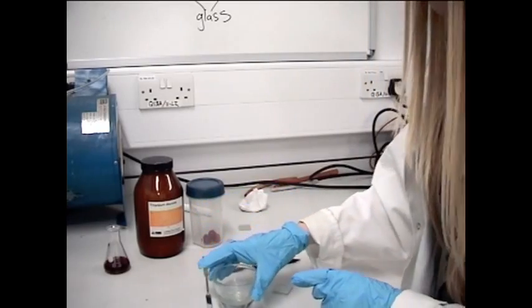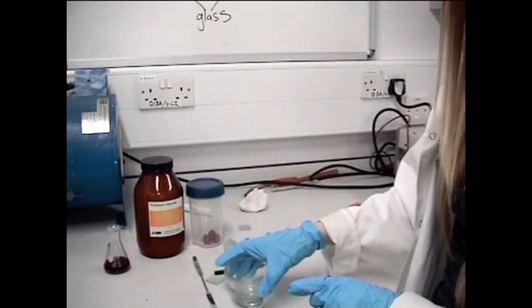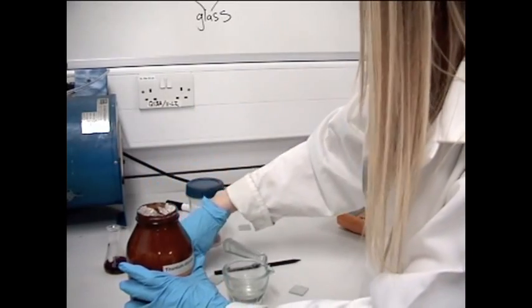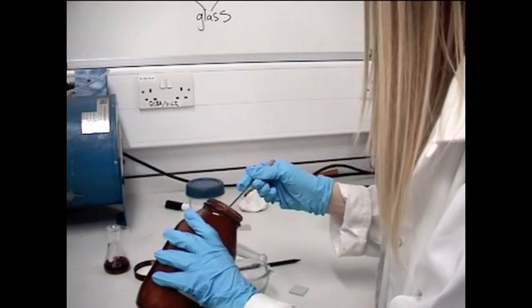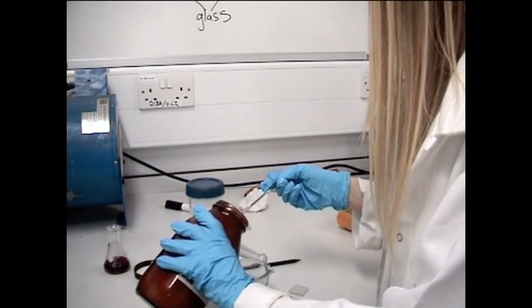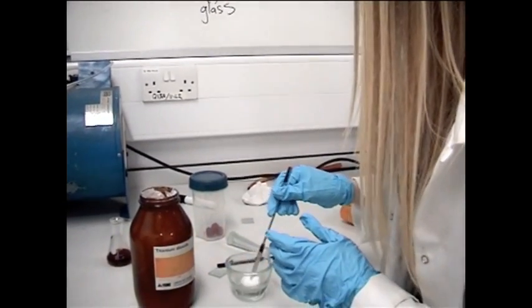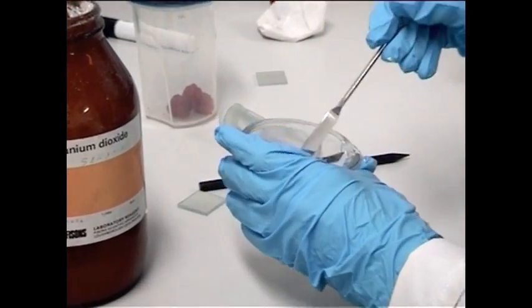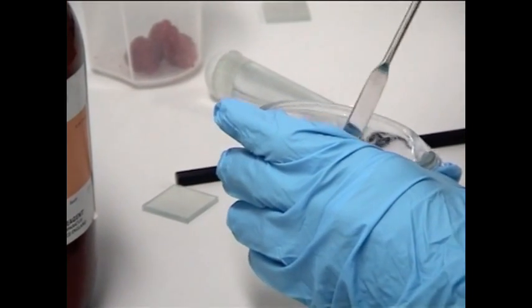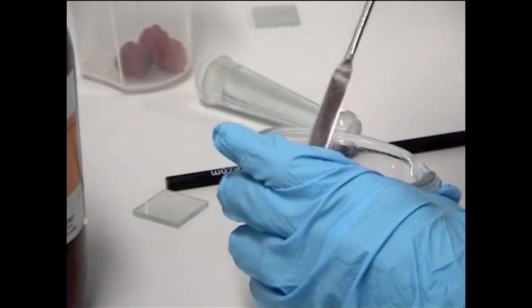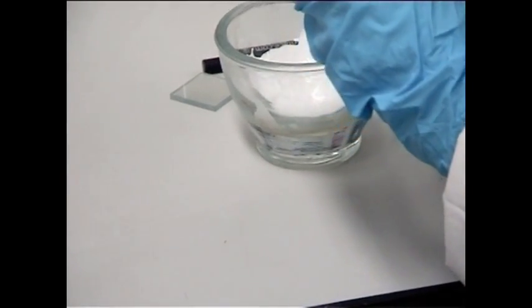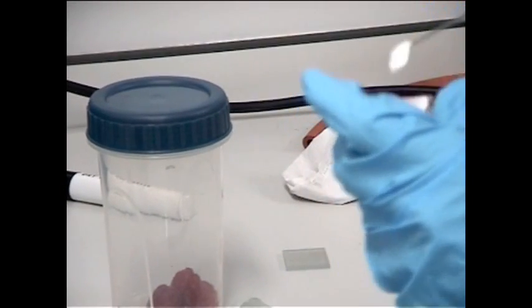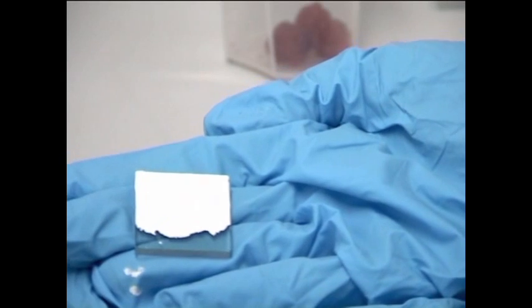So what I've got here is just a little bit of water in a mortar, and I'm just going to pour a little bit of titanium dioxide in it. So I'm just going to make a paste out of this. So now I want to put this on my glass slide. So this is what our glass slide looks like now.